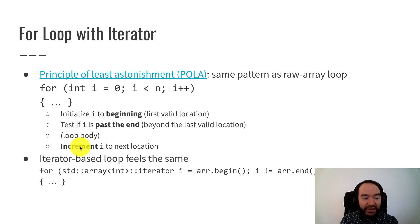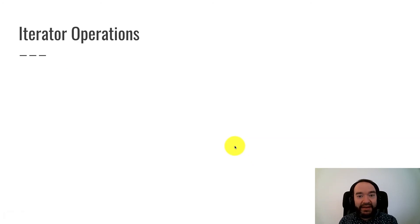So here's a preview of how they work. You have a for loop, and the first statement would create an iterator i at the beginning. So this is the first valid location in the array or other data structure. As long as we're not past the end, we increment i, the iterator, and keep going. So these iterators start at a valid location, they'll end at an invalid location, this past-the-end concept.